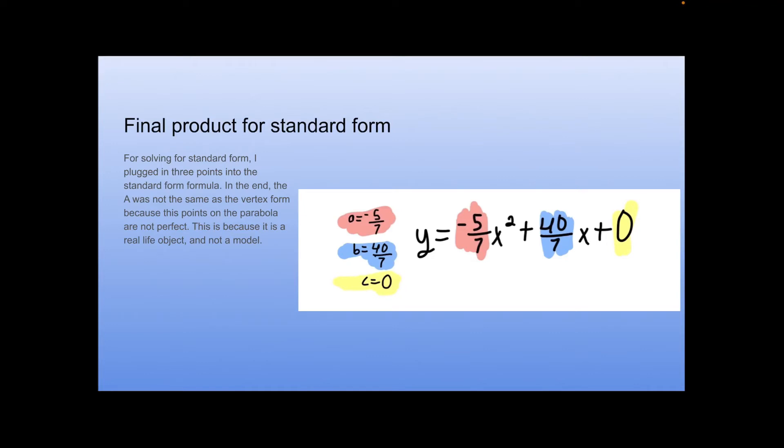And for solving standard form, I plugged in the three points into the standard form formula. In the end, the a was not the same as the vertex form because the points on the parabola are not perfect because it's a real life object and not a model.